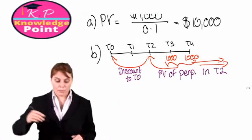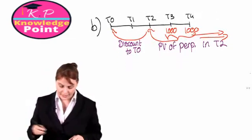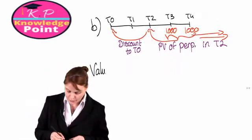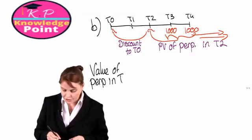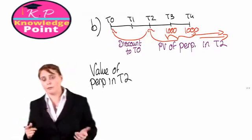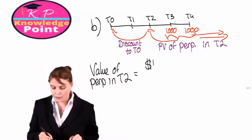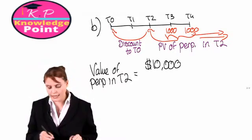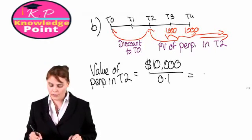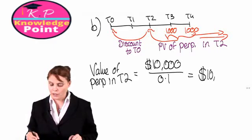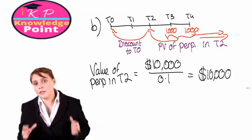Step one, we calculate the value of the perpetuity in T2, the year immediately before we get the first payment. It will just be our formula, the annual cash flow divided by the discount rate of 0.1. So, we get a value of 10,000.